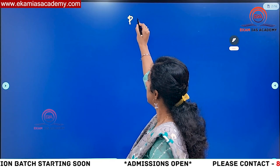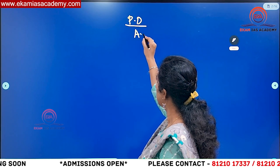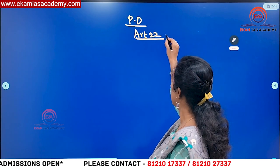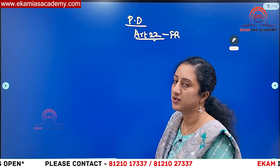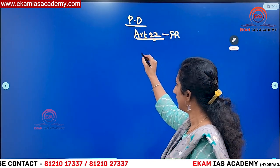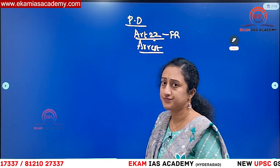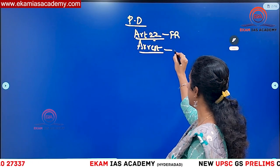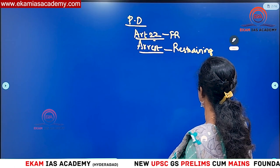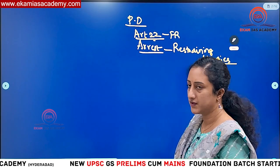First we need to understand what is preventive detention. Under Article 22 of the Indian Constitution, we have some provisions — Article 22 is a fundamental right that protects you against arbitrary arrest or detention. Arrest means restraining the liberties of an individual.